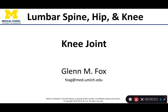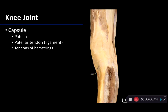Let's talk about the knee joint. The knee joint is one of the major synovial joints of the lower limb. It's oftentimes referred to as the tibiofemoral joint, and it's worth mentioning that there are three joints in one: two tibiofemoral articulations and a patellofemoral articulation, which comprise the knee joint.